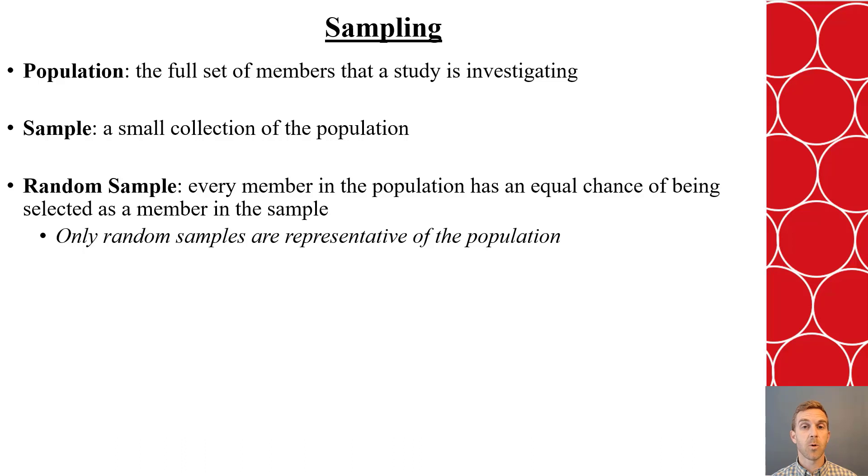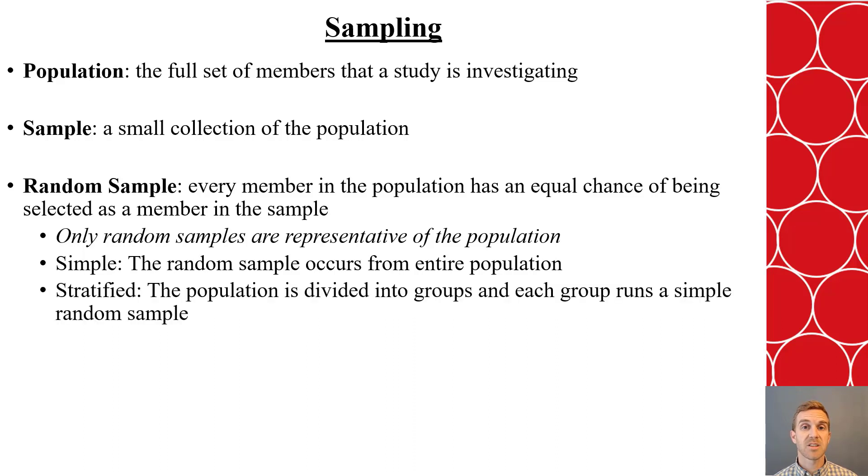Now, there are four common methods used for random sampling. There is the simple random sample, which in this method, we take a look at the entire population and randomly select members from that population. In a stratified random sample, the population is subdivided into groups, or strata. And then within each of those groups, a simple random sample is performed. This can be helpful if the groups are distinct while also representing the overall population. For example, if you are doing a study and you want to make sure that all socioeconomic groups are being represented, a stratified random sample can be helpful.